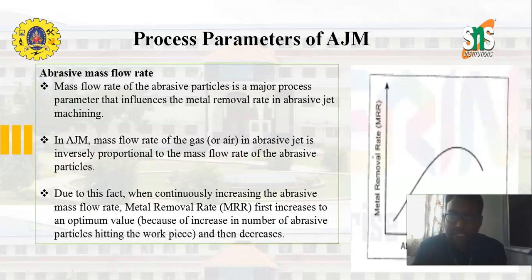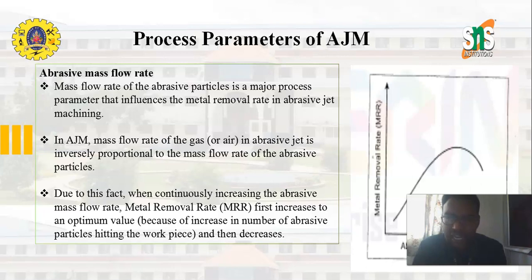Abrasive mass flow rate is the major process parameter that influences the metal removal rate in abrasive jet machining. In AJM, mass flow rate of the gas in the abrasive jet is inversely proportional to the mass flow rate of the abrasive particles. Due to this fact, when continuously increasing the abrasive mass flow rate, metal removal rate first increases to the optimum value because of the increasing number of abrasive particles hitting the workpiece, and then finally it decreases. This is clearly explained in the graph.